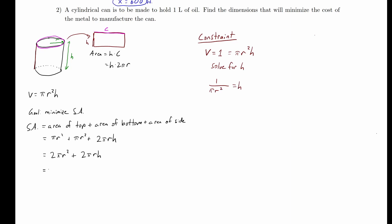Plugging h equals 1 over pi r squared into the surface area function and simplifying: the pi in the numerator and denominator cancel, as do one of the r's. We're left with 2 pi r squared plus 2 r to the negative 1 power. Rewriting the fraction as a negative exponent makes it more convenient to differentiate. Now we're ready to differentiate.